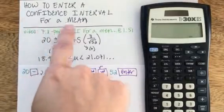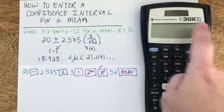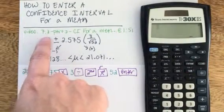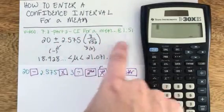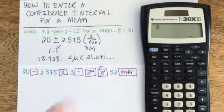Now I'm going to show you how to enter a confidence interval for a mean on the TI-30X2S. Specifically, I took the problem from my video titled 7.2, part 2, CI, meaning confidence interval for a mean, and this exact problem is shown at timestamp 1 minute and 51 seconds.